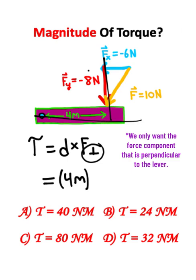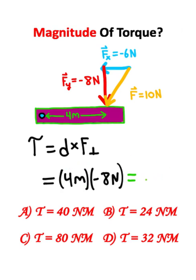If I look at the perpendicular component, that's going to be this negative eight Newtons. So I'll have negative eight Newtons times four meters, which will give me a torque of negative thirty-two Newton meters.